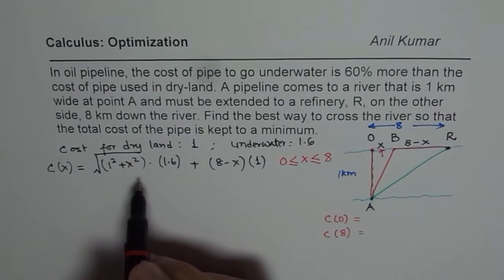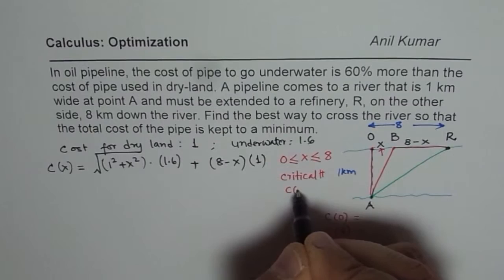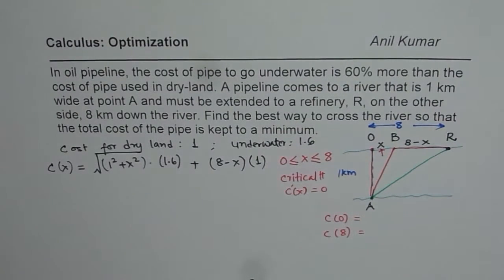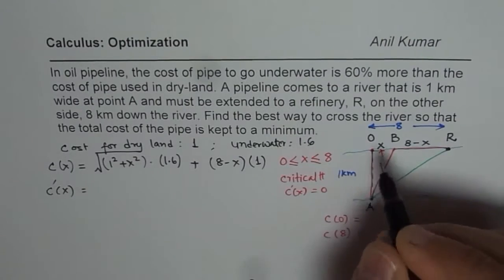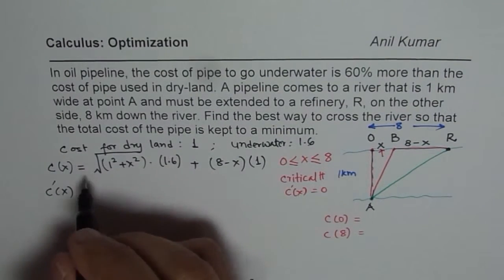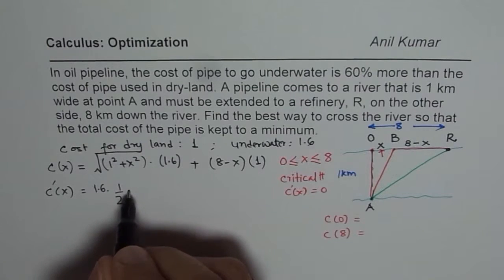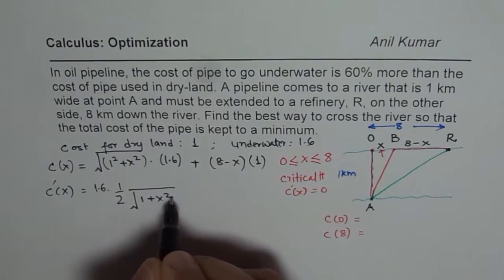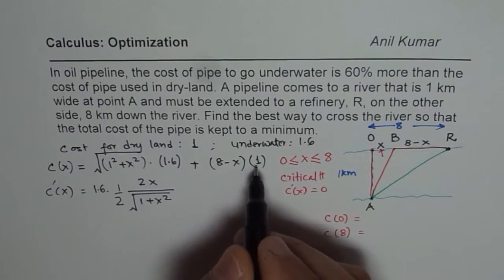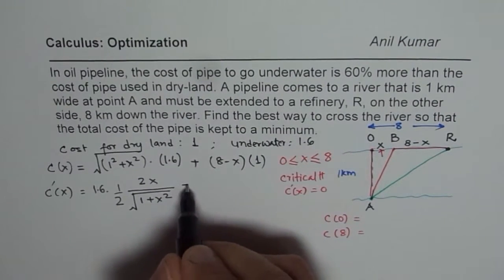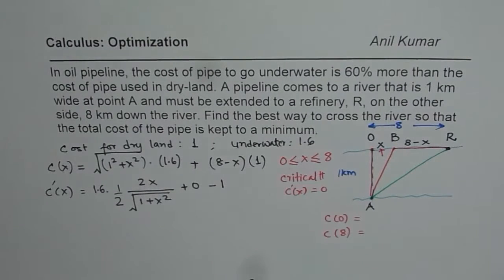Let us find the critical number. Critical number is where the derivative is equal to 0. The derivative of cost with respect to distance x is: 1.6 times half times (1 + x²)^(-1/2) times 2x, plus derivative of (8 - x) which is -1. So that is the derivative for the cost function.